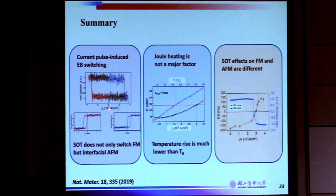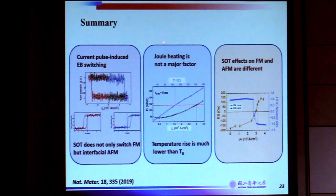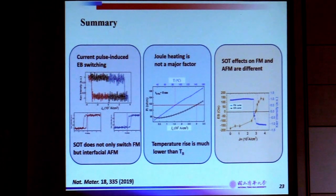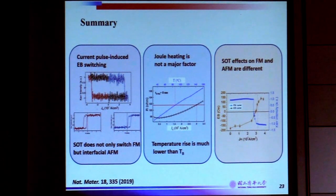Let me give you the summary. I hope I have clearly shown how we can use current pulses to switch exchange bias through spin-orbital torque. I hope I have convinced you that Joule heating indeed exists but is not the major factor for the observed exchange bias switching by SOT. We observed that the SOT effects on the ferromagnet and the antiferromagnet are not exactly the same, and that remains a challenge for us to understand how spin current and spin-orbital torque affect the spin structures in the antiferromagnet.